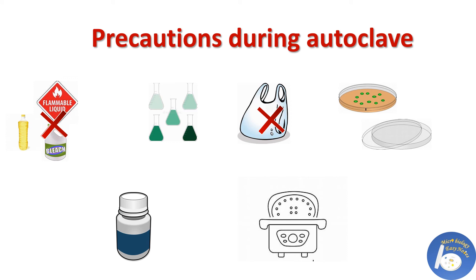Precautions during autoclaving: paper, water-resistant materials like oil and powder, flammable, toxic, bleach, highly reactive, and radioactive materials should not be autoclaved. Items placed inside the chamber should not touch the sides or top. Autoclavable bags should be used to package waste — normal polythene bags cannot be used. There should be sufficient gap between all items for steam to reach every corner. Disposable and clean items should be autoclaved separately. Liquid items should not be autoclaved in sealed containers; lids should be slightly loose and containers filled to only one-third. Never attempt to open the lid in the middle of operation.